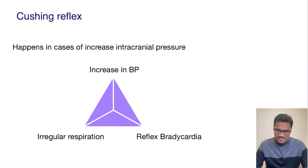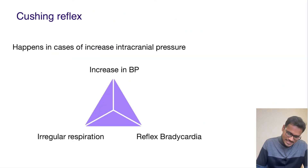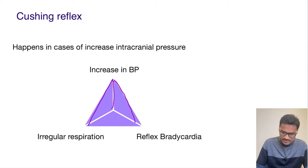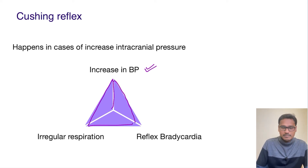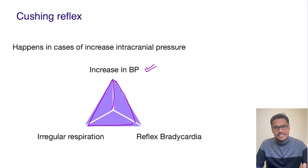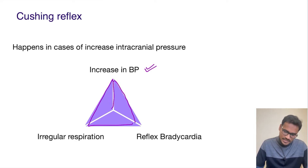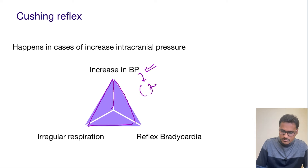In the Cushing reflex we have a classical triad — three things will happen. First thing is there is a rise in BP. As we have seen, there is a high rise in BP, and this high rise in BP will obviously be sensed by our baroreceptors.